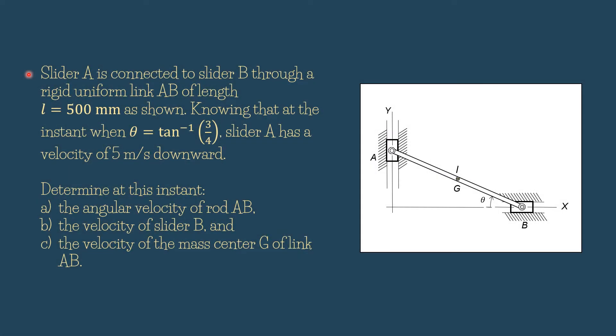Slider A is connected to slider B through a rigid uniform link AB of length L equals 500 mm. Knowing that at the instant when theta equals tangent negative 1 of 3 over 4, slider A has a velocity of 5 meters per second downward. Determine at this instant: A, the angular velocity of rod AB; B, the velocity of slider B; and C, the velocity of the mass center G of link AB.